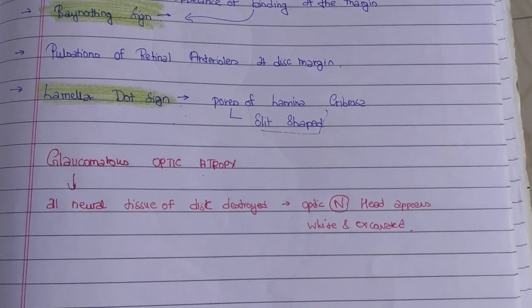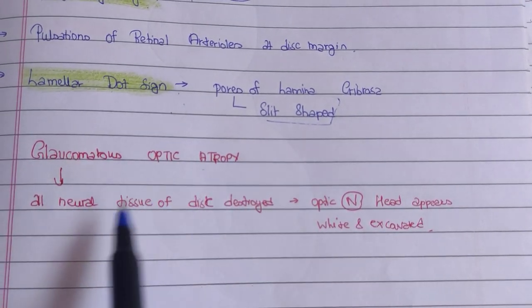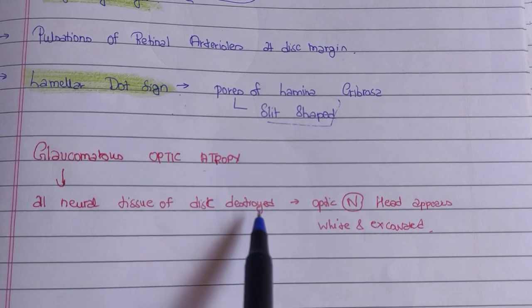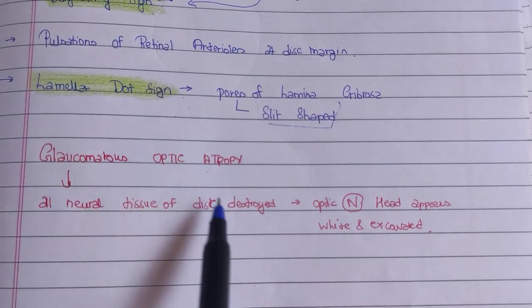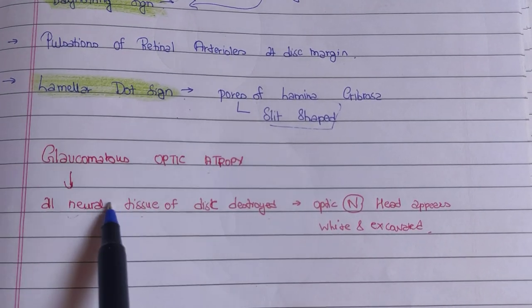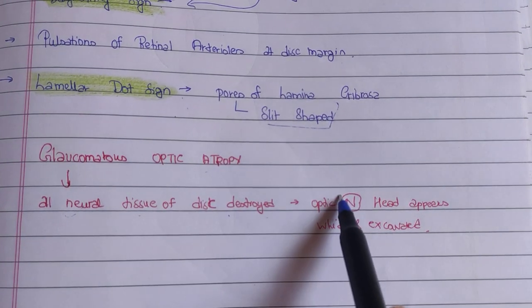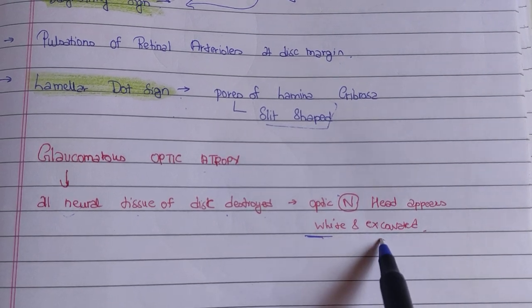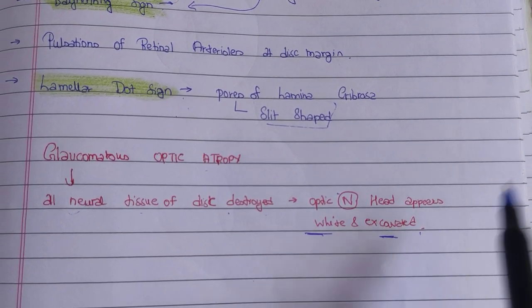Finally, glaucomatous optic atrophy: all neural tissue of the disc is destroyed. The disc's entire neural tissue is destroyed at this point, and the optic nerve appears very white and excavated.